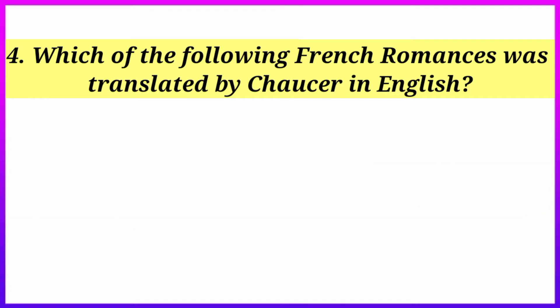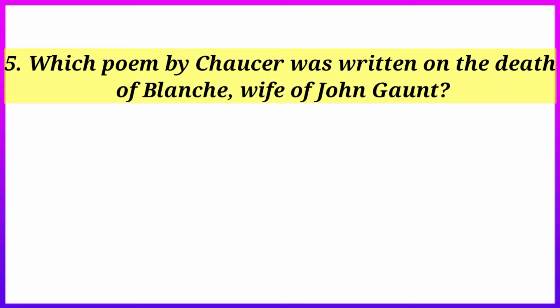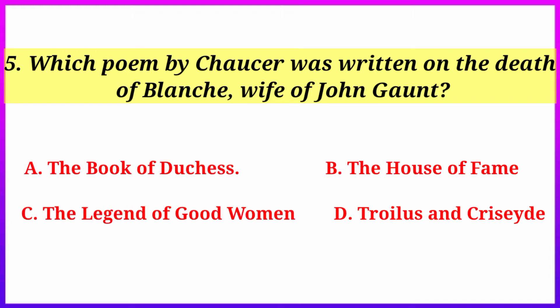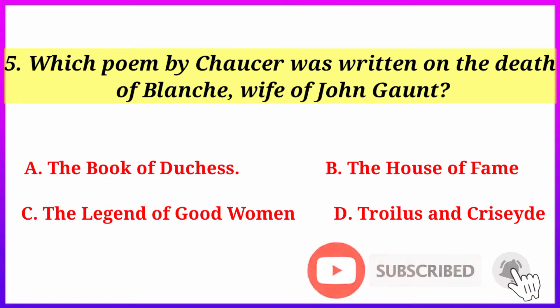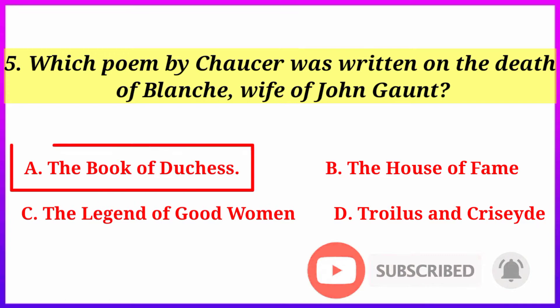Next: which poem by Chaucer was written on the death of Blanche, the wife of John Gaunt? Options: The Book of the Duchess, The House of Fame, The Legend of Good Women, or Troilus and Criseyde. The correct answer is The Book of the Duchess.